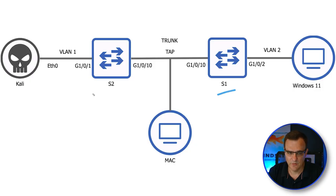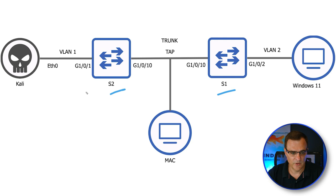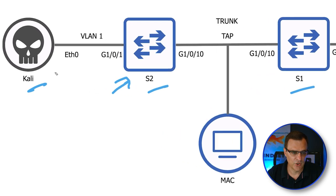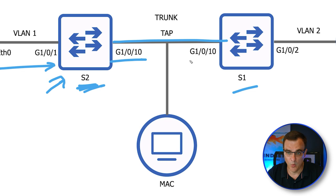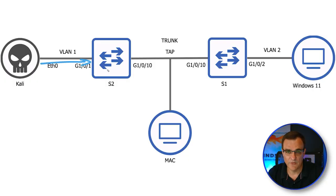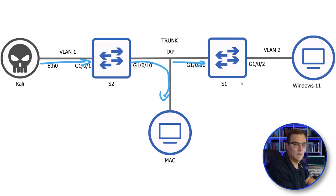In this topology I've got two switches — Switch 1 and Switch 2 — which are Cisco 1000 series switches running the latest software. A Kali virtual machine is connected to Gigabit 1/0/1 on Switch 2, and Switch 2 connects to Switch 1 on Gigabit 1/0/10. I've also got a tap on that link to capture traffic and show what the 802.1q tags look like. The two switches connect through the tap to my Mac so I can capture traffic in Wireshark.